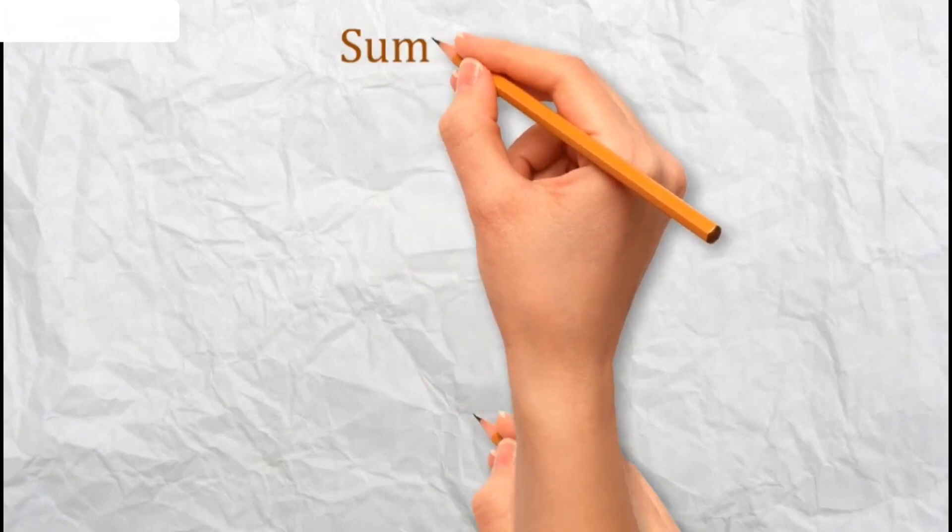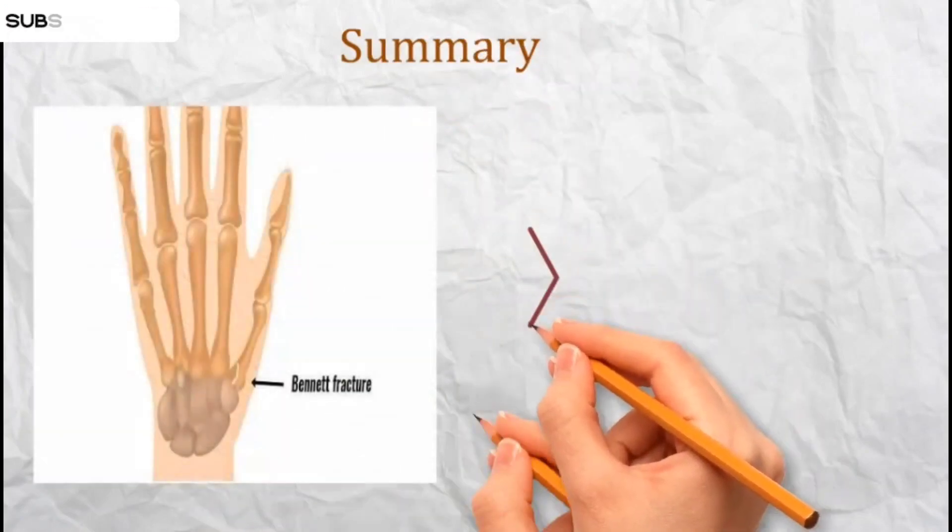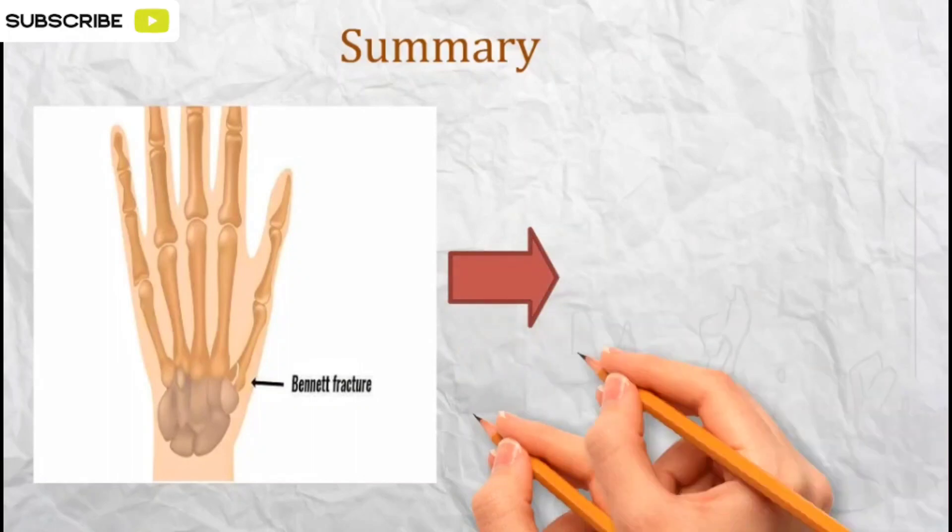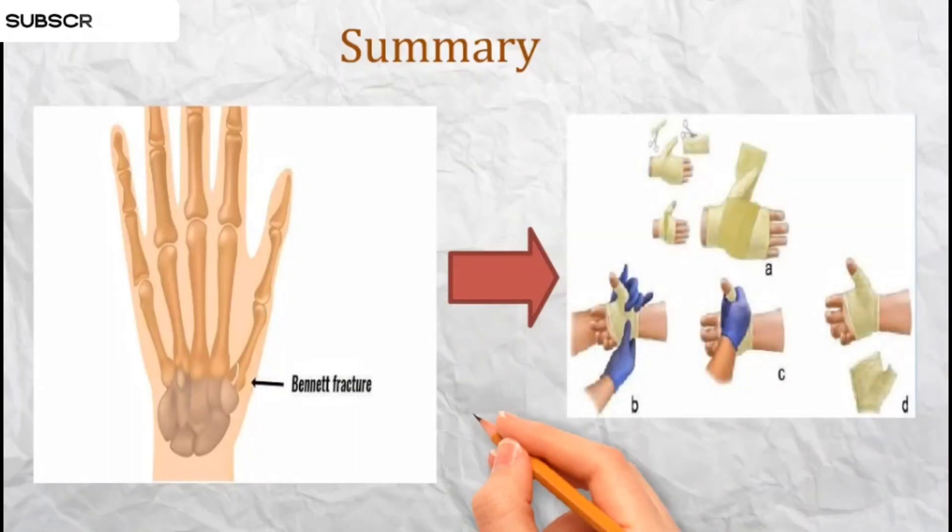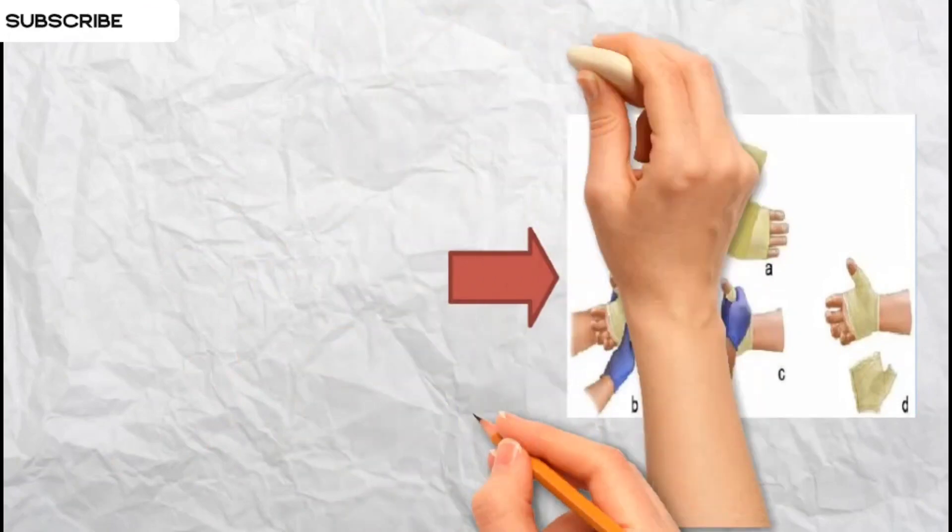In summary, Bennett's Fracture is a specific type of injury at the base of the thumb metacarpal. Timely and appropriate treatment is crucial to prevent complications and ensure the restoration of useful function of the thumb.